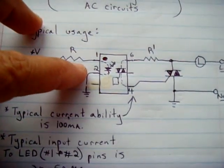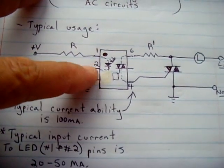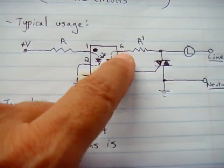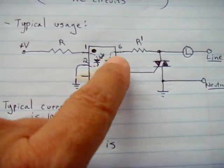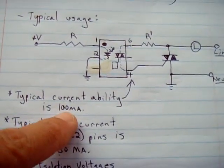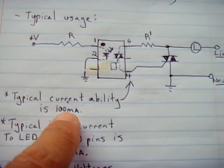These are typically rated for only around 100 milliamps. You don't want more than 100 milliamps passing through this side of the optoisolator between pins 4 and 6. Most of them are rated right around that amount.